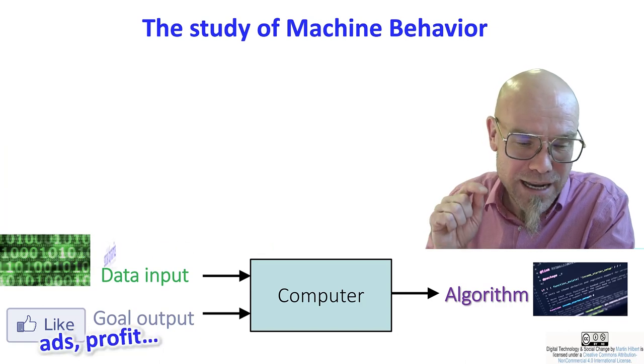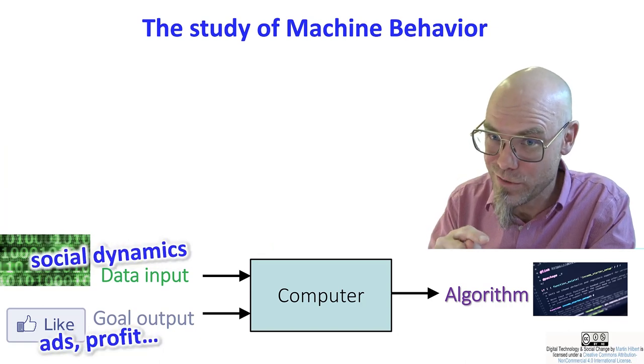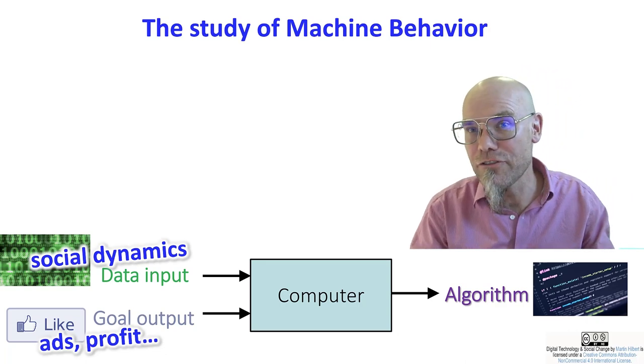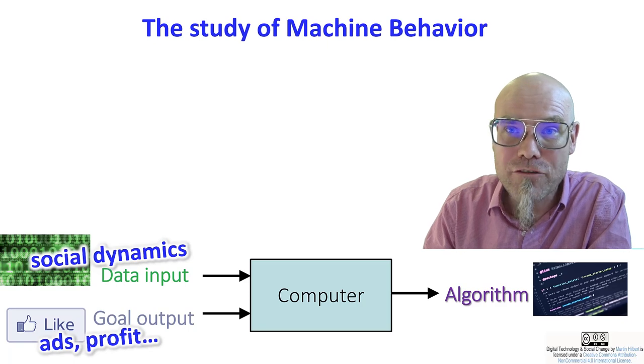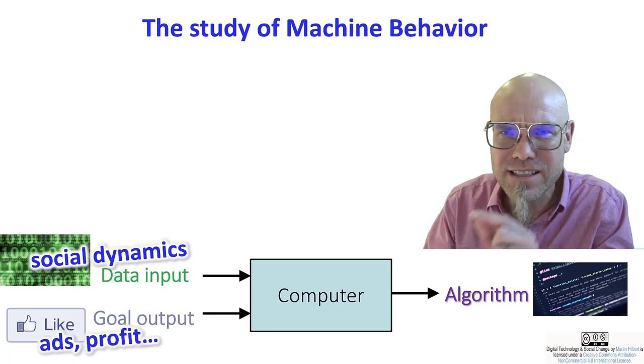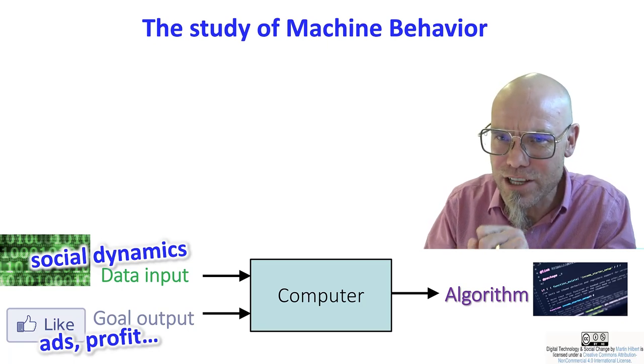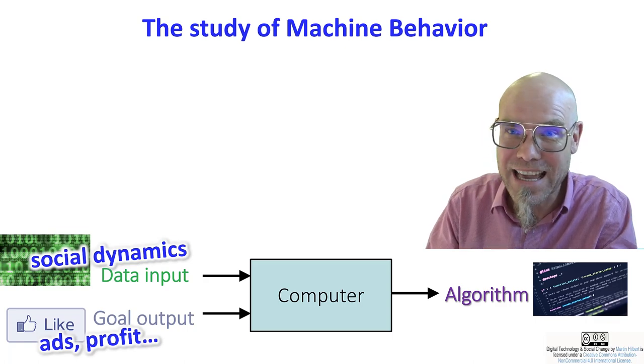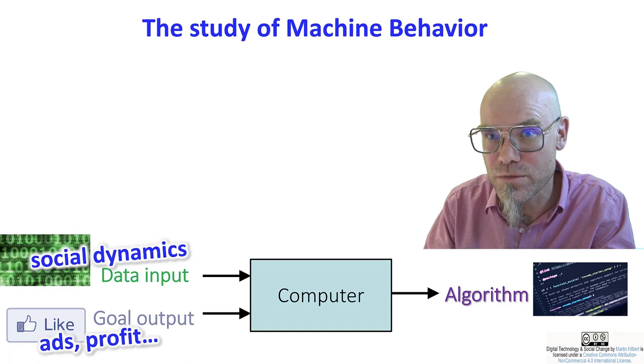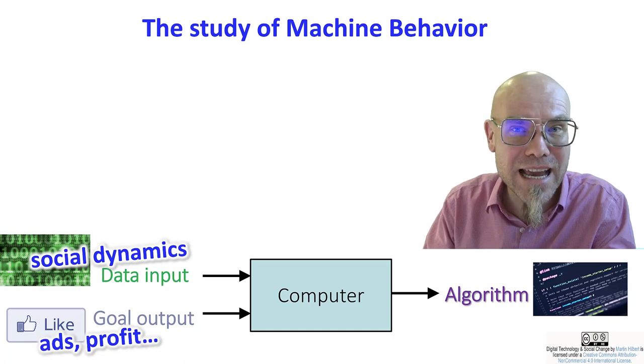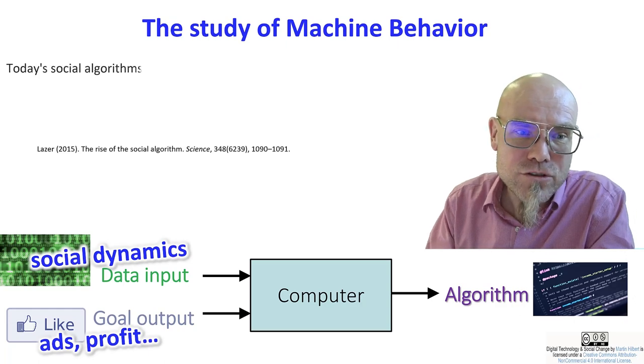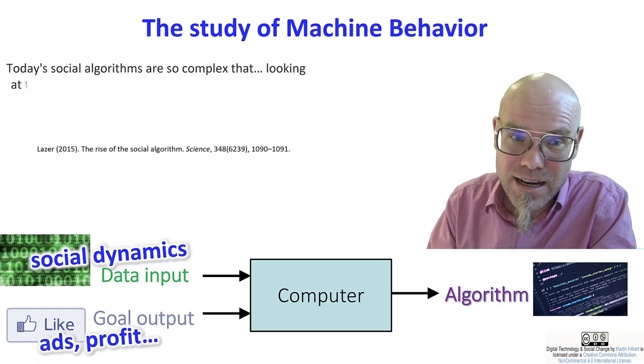And that led to a new field of study that I'm also involved in—that's the study of machine behavior. Because it's not really clear what these algorithms do, and if these algorithms are really aligned—talking about AI alignment, a term we will come back to later—with what we actually are looking for.